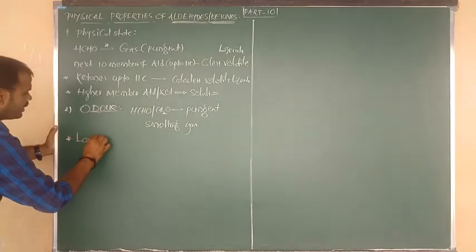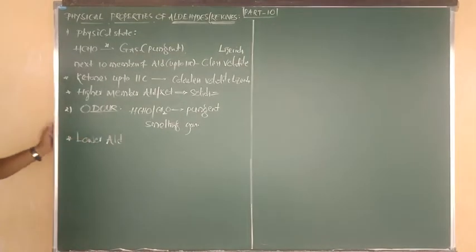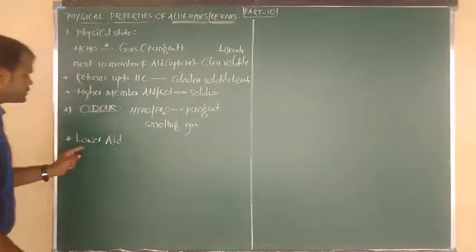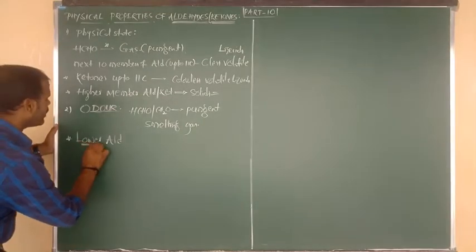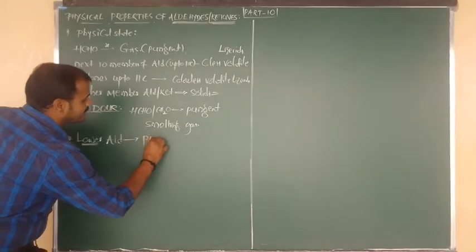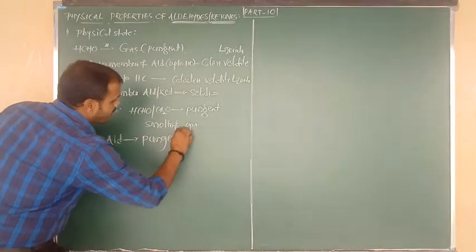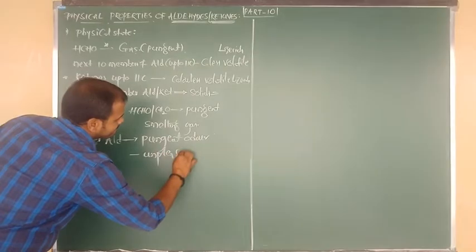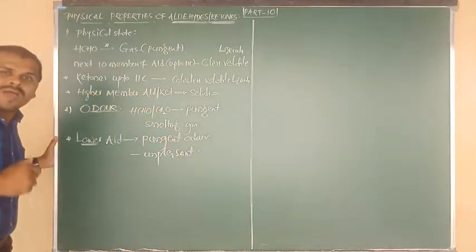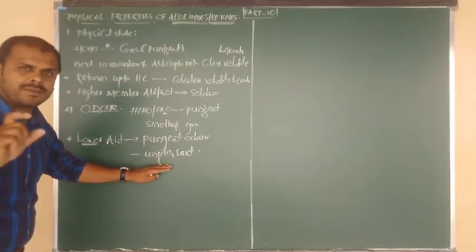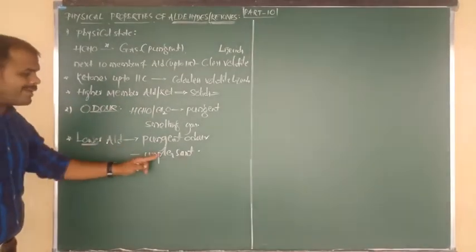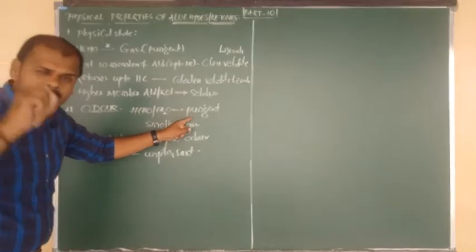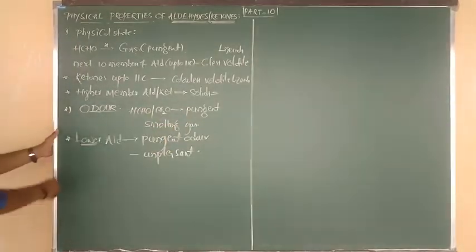Other lower aldehydes — acetaldehyde, propanal, butanal, etc. — all have pungent odor, meaning they have unpleasant smell. Lower aldehydes have a very sharp, pungent order and bad smell. Formaldehyde in particular is very dangerous and highly pungent.